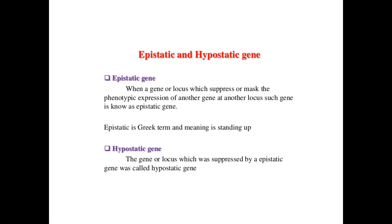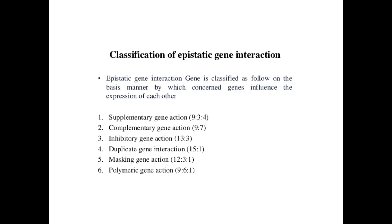Hypostatic refers to the gene or locus which is suppressed by an epistatic gene. So if a particular gene is suppressing another gene, the gene which is being suppressed is known as hypostatic. Epistatic gene interaction is classified based on the basic manner by which the concerned genes influence the expression of each other — that is, how these genes are regulating different actions.